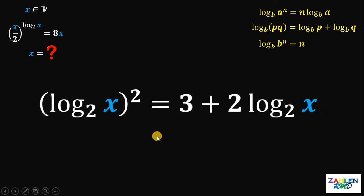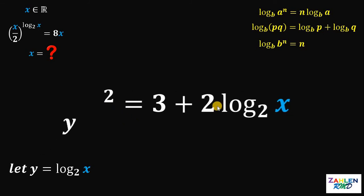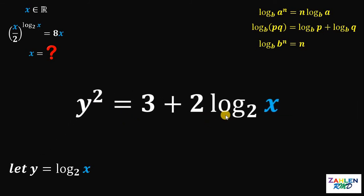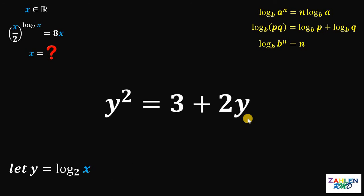To make it simple, let y be equivalent to logarithm of x to the base of 2. Therefore, the left-hand side of our equation is just y squared, and 2 times logarithm of x to the base of 2 is just 2y. We now have a quadratic equation in terms of y.